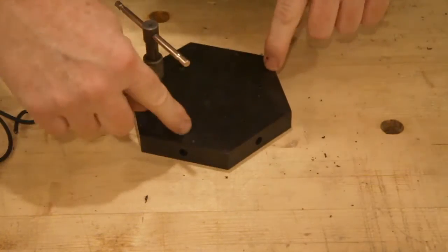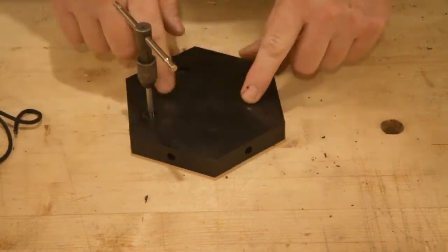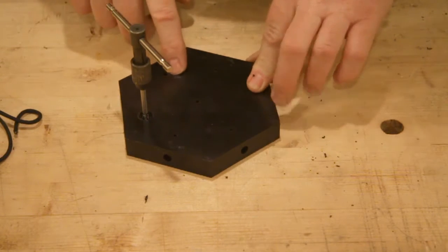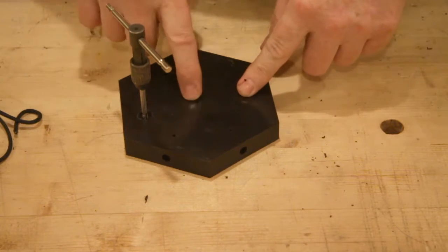We're going to go ahead and tap these holes that are for the set screws that will hold our poles in place. Remember they don't go all the way through. We will not tap the center hole.